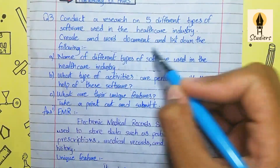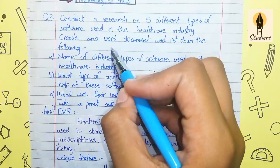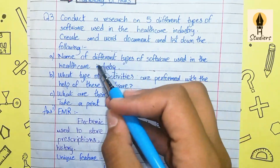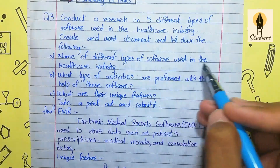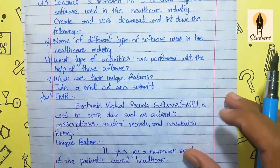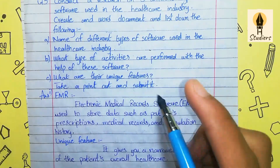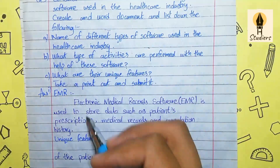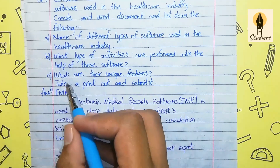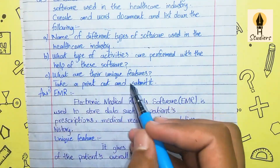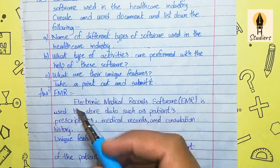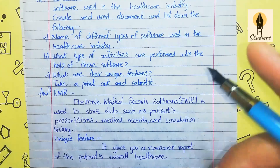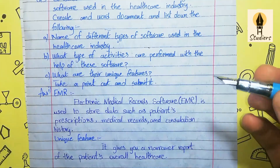Conduct a research on five different types of software used in the healthcare industry. Create a Word document and list down the following: the name of different types of software used in the healthcare industry, what type of activities are performed with the help of the software, and what are their unique features. Take a print out and submit it.